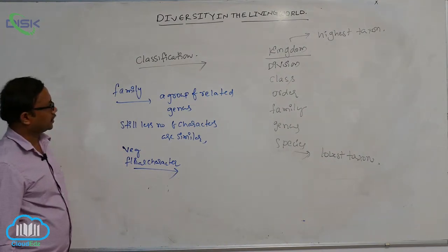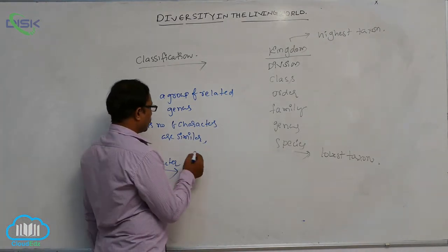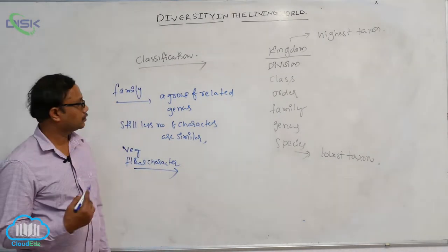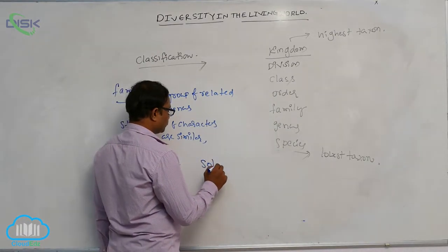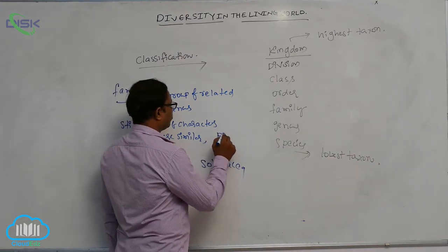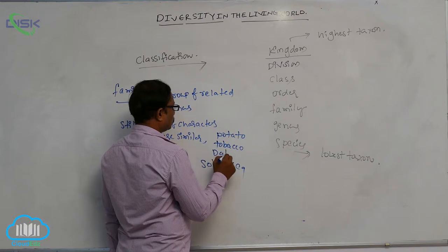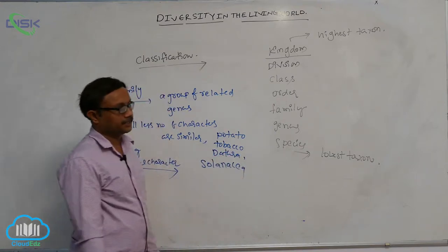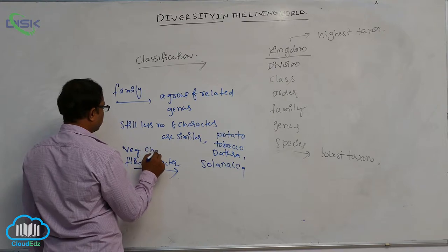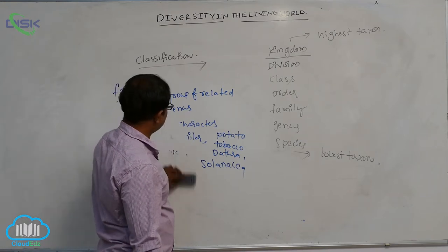Genus is related to that family. Solanum tuberosum, Solanum melangena, Nicotiana tabacum — all these genera belong to the family Solanaceae. The Solanaceae family includes potato, tobacco, and datura. They show similar vegetative and floral characters. That is known as the family.